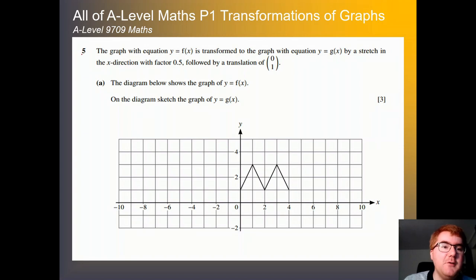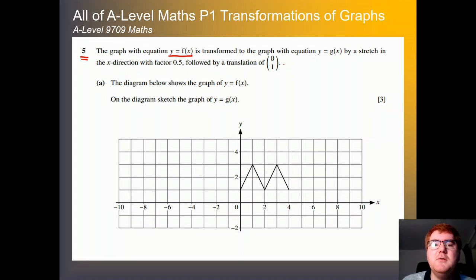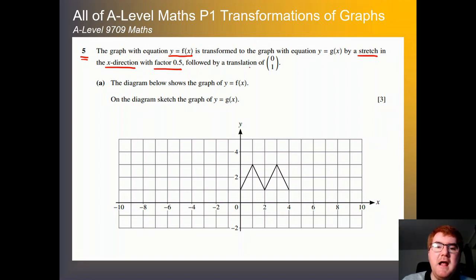Let's get started. We have question 5 here and we have the graph with equation y equals f of x. This is always a very good hint if we're not told what the function is — it's often a transformation of the graphs question. It's transformed to the graph g of x by a stretch in the x direction, factor 0.5 or a half, followed by a translation of (0, 1). We're given what f of x is and we now need to draw the graph of g of x.